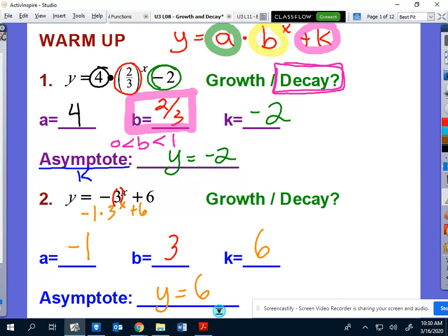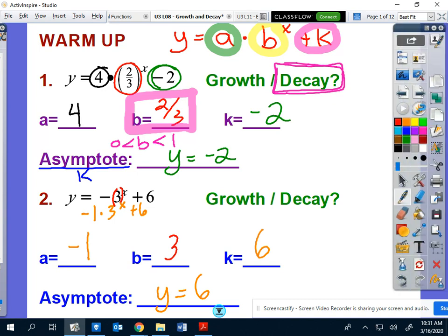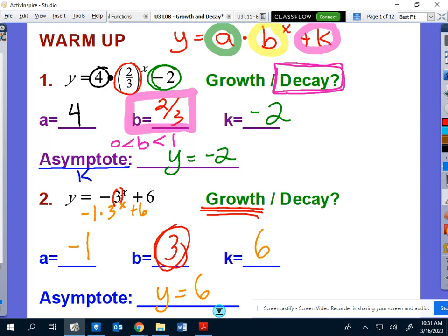So hopefully that enables us to get going here on remembering what were the rules of a, what were the rules of b and k. Remembering that b is the most important one. b determines whether it is growth or decay. So if that's the case, if my b value is positive three, then all day that is going to be growth, because anything that is greater than one is exponential growth.